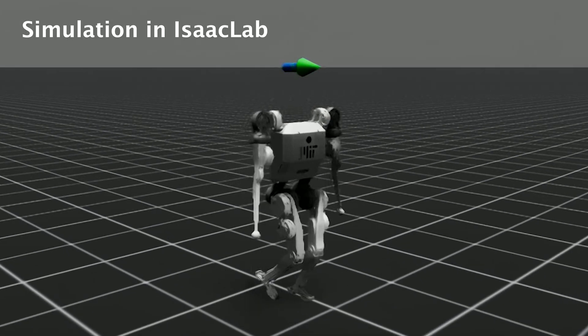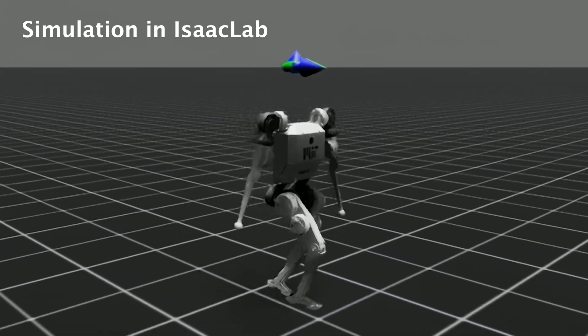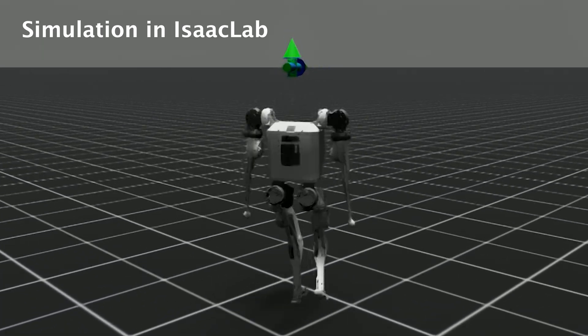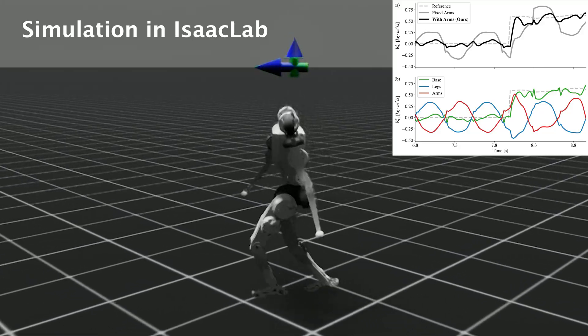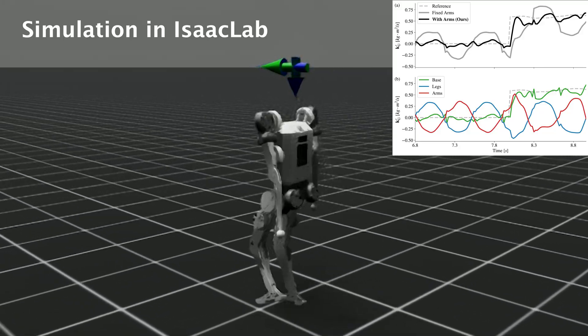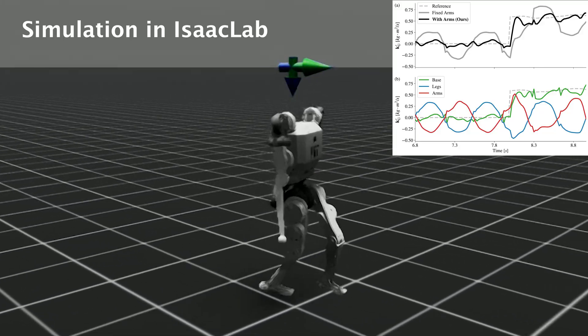To promote coordinated whole-body motion, we design reward terms based on centroidal angular momentum. For the arm, we use vertical CAM tracking term to induce natural antiphase arm swings relative to leg motion, while also penalizing horizontal CAM buildup to help the robot dissipate perturbations effectively.